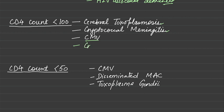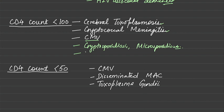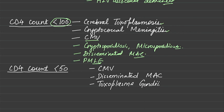There are a few more notorious organisms known for causing chronic diarrhea at CD4 less than 100: cryptosporidiosis and disseminated MAC. Also very important to memorize at CD4 less than 100 is PML — progressive multifocal leukoencephalopathy.